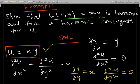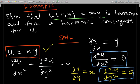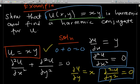Now let's add these two: zero plus zero equals zero. So we have shown that u is harmonic. We remember that one of the functions is the harmonic conjugate of the other, which means the combined function is analytic. The combination of this harmonic function and its conjugate gives us an analytic function.